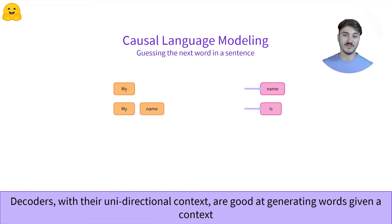We then take that new word and add it to the initial sequence. From my, we are now at my name. This is where the autoregressive aspect comes in.